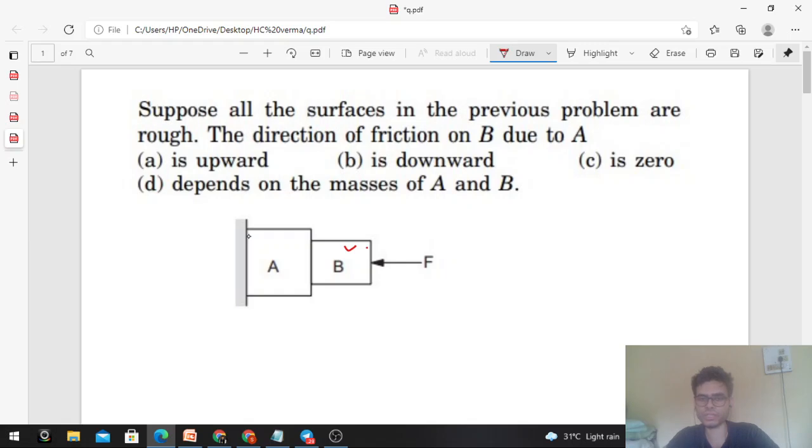So we need to draw the free body diagram of B first. So let's see what forces are acting. First, there's an external force F that you are applying. Further, there will be a normal reaction force between A and B. So let's call it N1. So N1 is acting on B in this direction, and on A it's equal and opposite, so N1 acts on A.